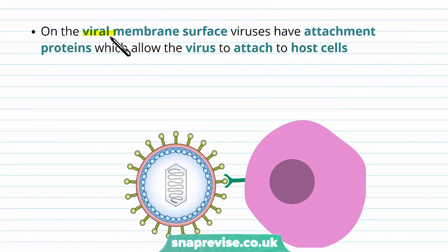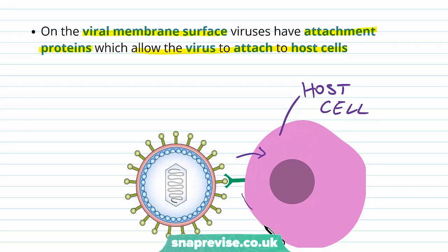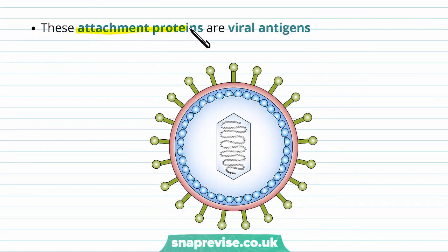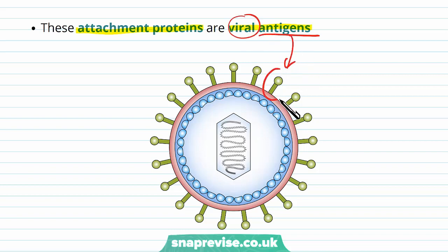Sometimes the virus also has a membrane, and on the viral membrane surface there are attachment proteins sticking out. These proteins allow the virus to attach to host cells. When the virus approaches a host cell it needs a way of entering, since cell membranes protect our host cells. The attachment proteins bind to certain receptors or proteins on the host cell and use this interaction to enter. We describe these attachment proteins as viral antigens, and it is often these proteins that the immune system mounts its attack on.